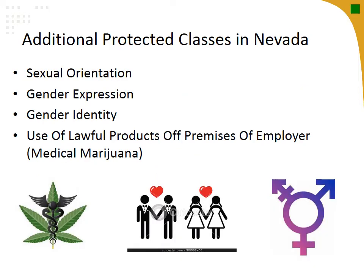States cannot limit federally protected classes, but states can expand the coverage of EEO laws. For example, in Nevada, the state covers sexual orientation, gender expression, gender identity, and the use of medical marijuana — as long as you're using it off-premises and have a prescription. Nevada is one of the states that is more progressive and expanding those equal employment opportunity laws.